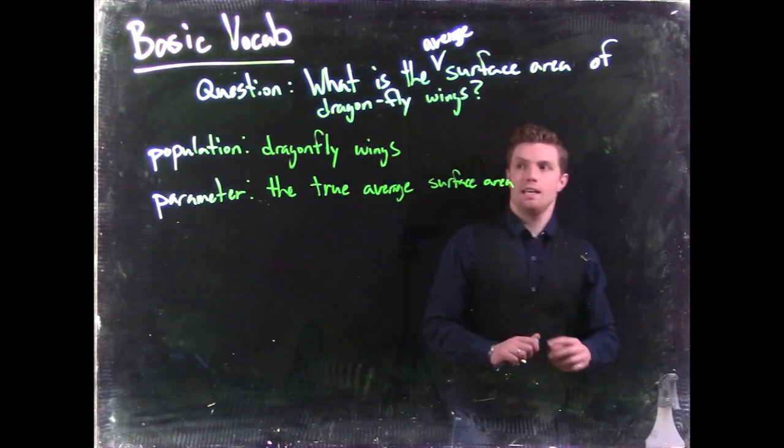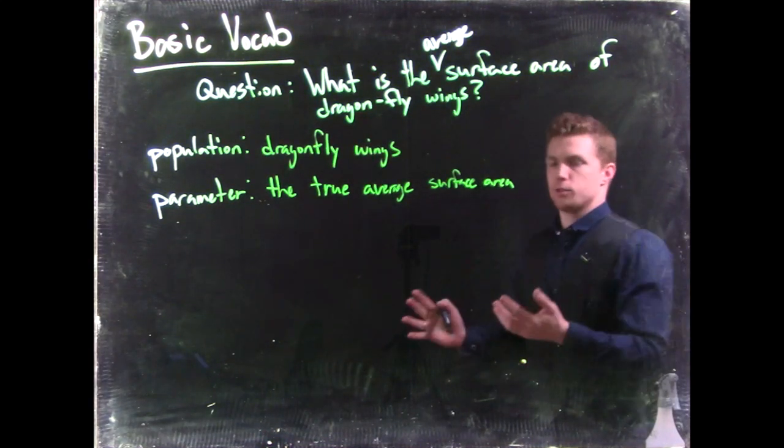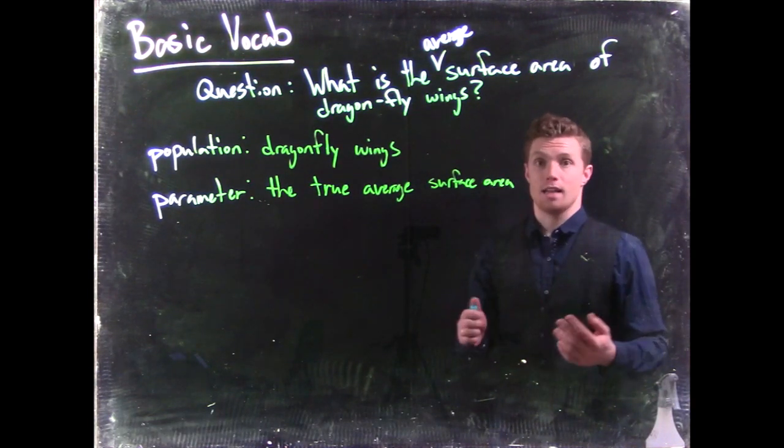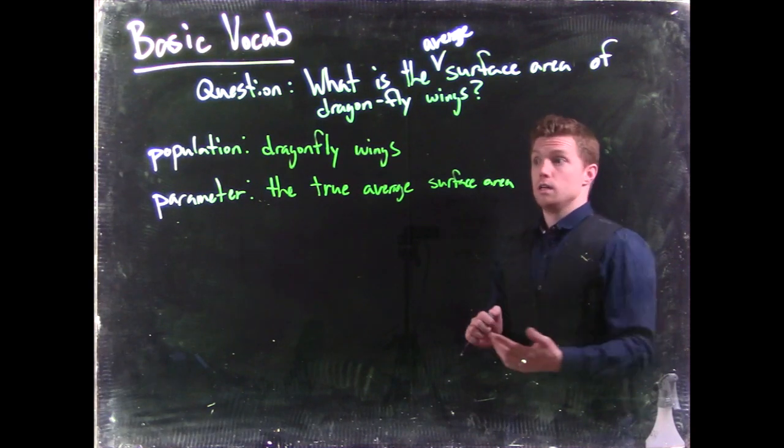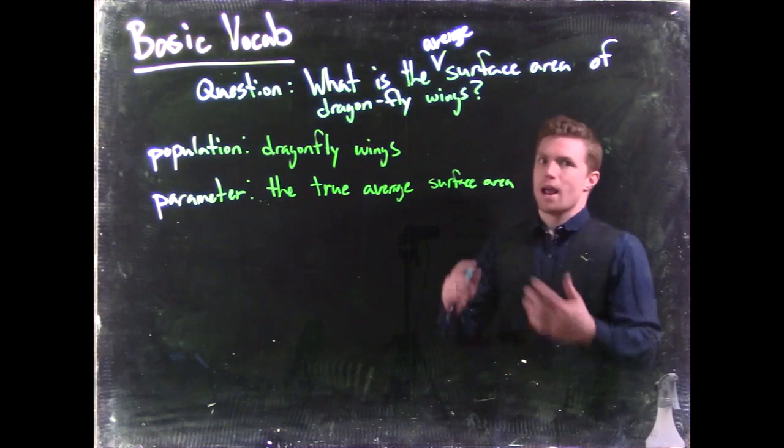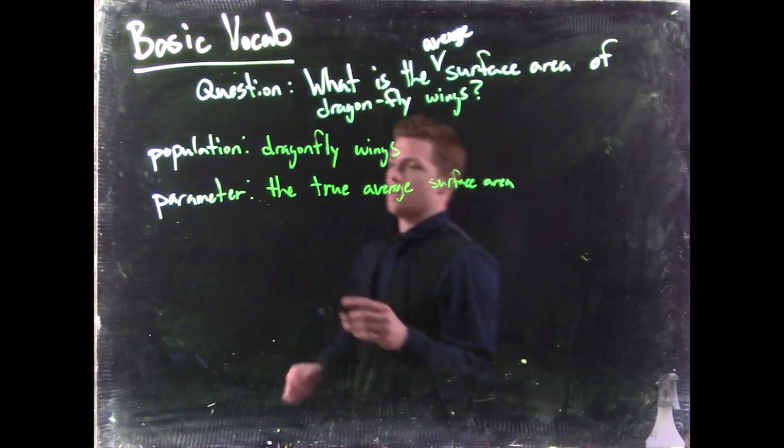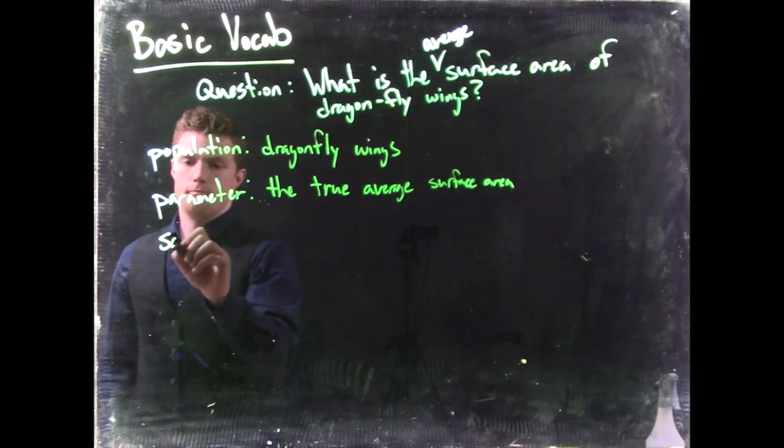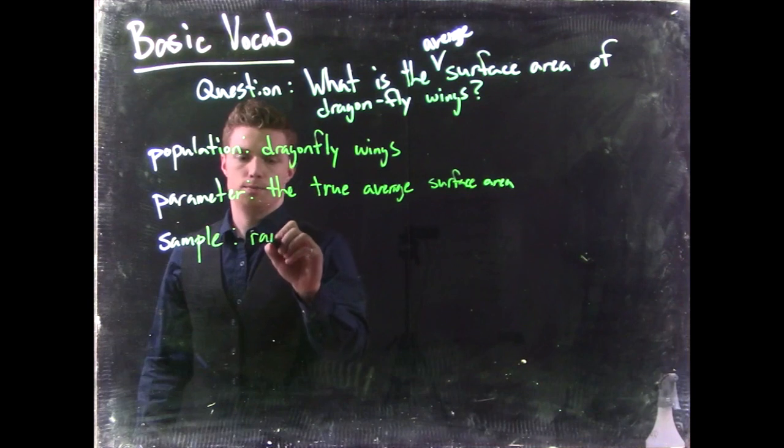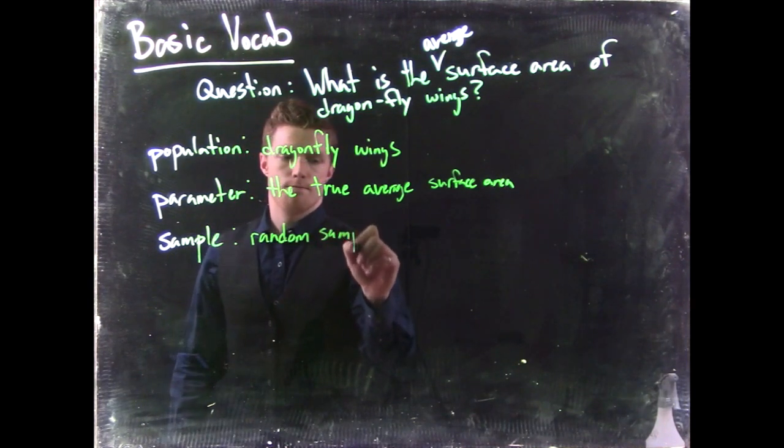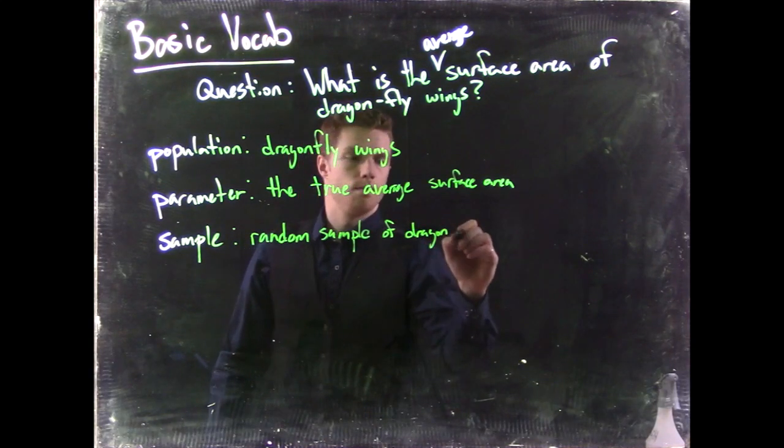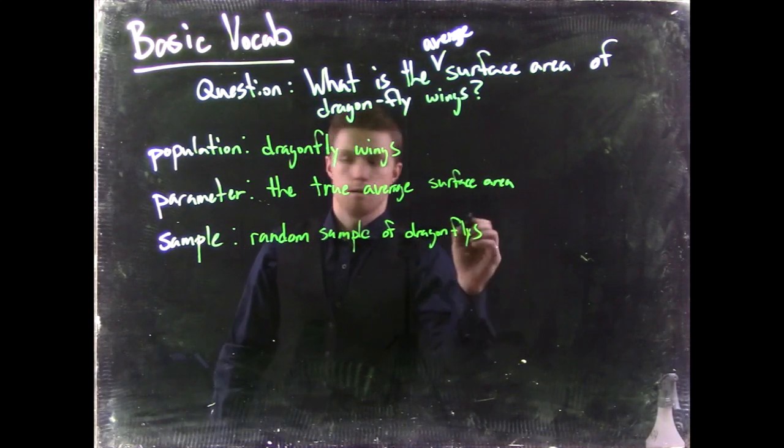Now practically speaking, it is not practical to go all throughout the world, capture all the dragonflies, measure their surface area, and take an average of that. That's how you would actually do it, but practically it's very hard to do that. So we need to take a sample. So we could do here just a random sample of dragonflies.